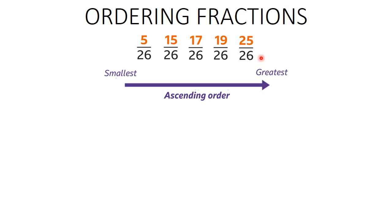This is the simplest way to compare fractions. It's like sitting for a test of 26 questions — it's very easy to see that the person with 25 over 26 has the greatest score. So if you have 5 over 26, 15 over 26, 17 over 26, 19 over 26, and 25 over 26, you can easily tell that the highest numerator means the best score.